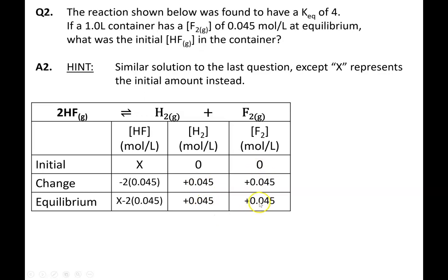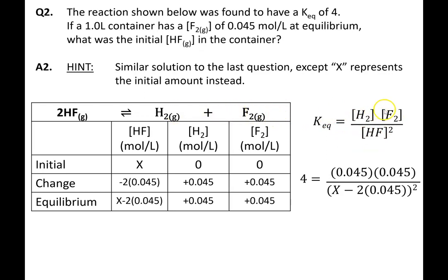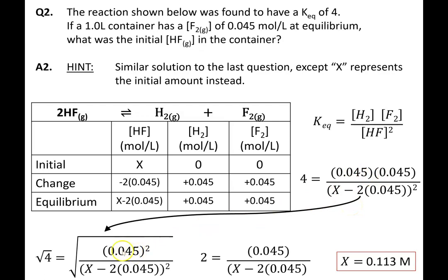Since 0 + y = 0.045, then y = 0.045, and I replace all y values with 0.045. At equilibrium: HF is x − 2(0.045), hydrogen is 0.045, and fluorine is 0.045. Writing the equilibrium expression with products in the numerator and reactants in the denominator — don't forget the exponent from the coefficient — and plugging in Keq = 4, I see similar terms 0.045 and 0.045, so I can square root both sides to avoid the quadratic. I get x = 0.113 molar — that is the initial concentration of hydrogen fluoride.